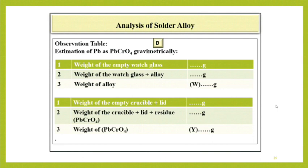Observation table. Weight of the empty watch glass. Weight of the watch glass plus alloy. Take the difference of these two. That will give you weight of the alloy as W gram.